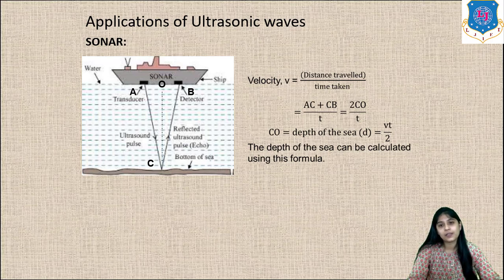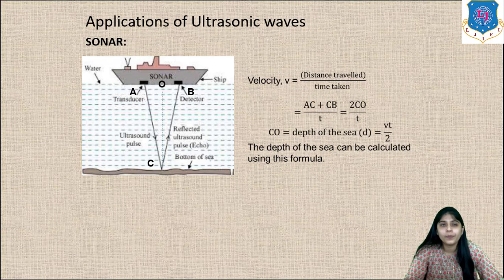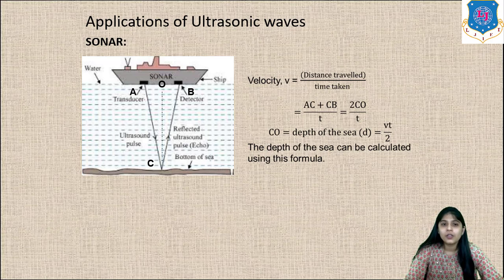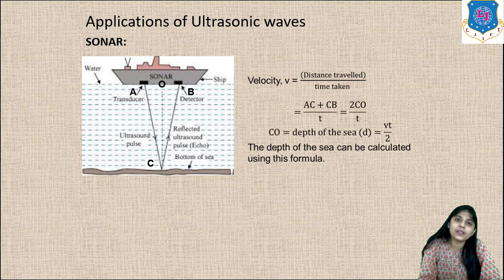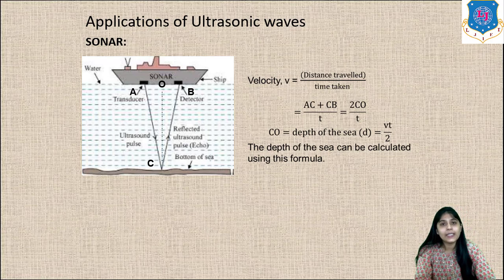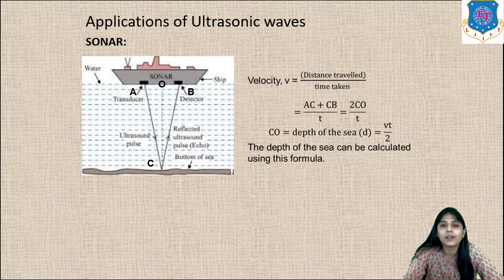The ultrasonic wave travels from A to C and C to B. Over such long distances, we can approximate AC ≈ CB ≈ CO, giving a total distance of 2CO. So CO, the depth of the sea, is D = Vt/2, where V is the known velocity of the ultrasonic wave and t is the time taken to travel the distance.